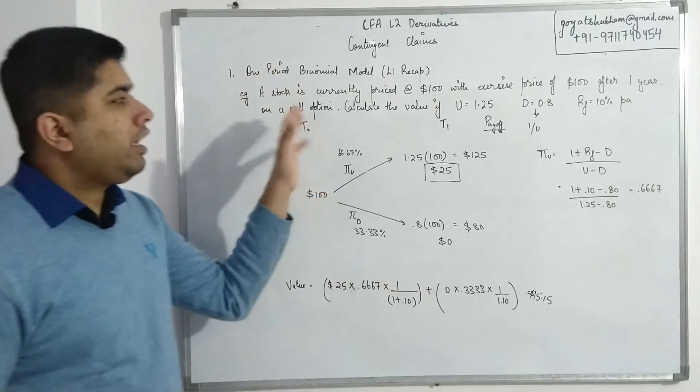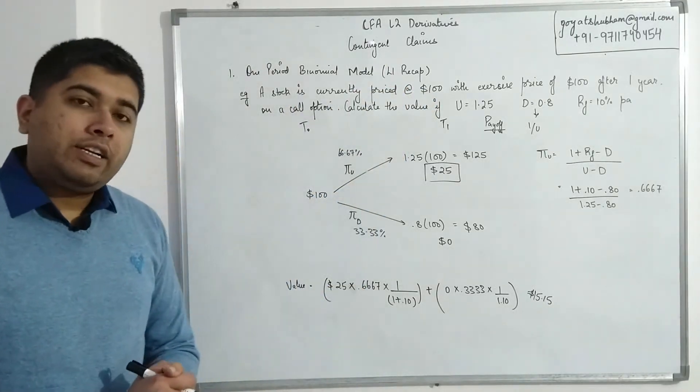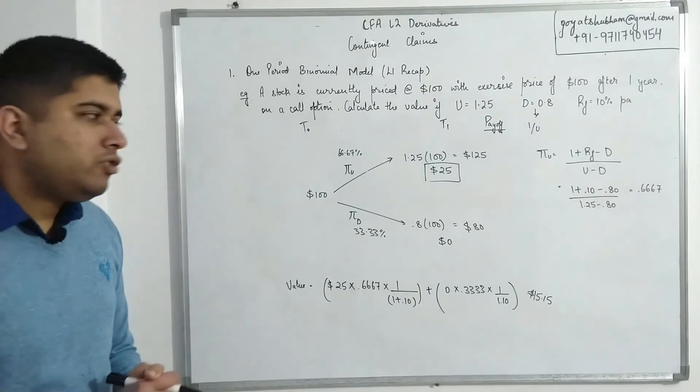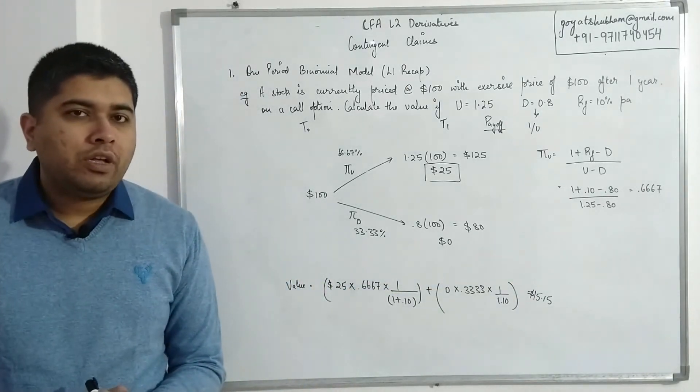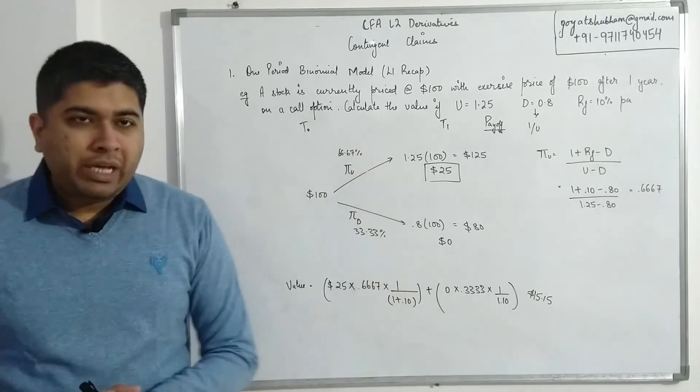If you solve for this, you'll get a value of 15.15 dollars. So effectively right now, this particular option that gives me a right to buy the shares after one year at an exercise price of 100 dollars is worth 15 dollars. The call option is worth 15 dollars.